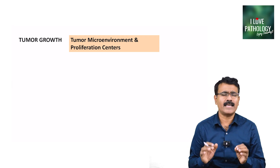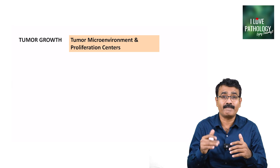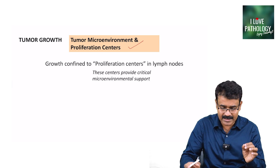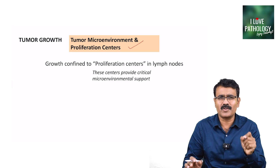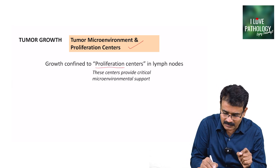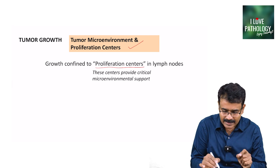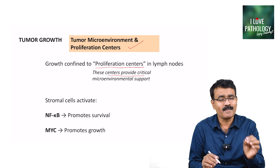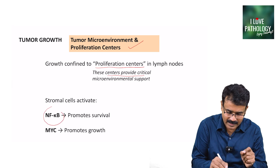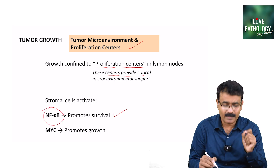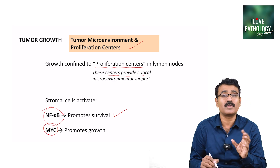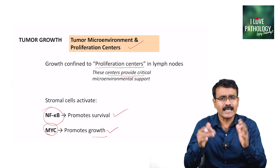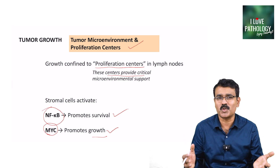Once we have the mutations, how does the tumor grow? The growth of CLL is confined predominantly in proliferation centers in the lymph node, which provide critical microenvironmental support. The stromal cells there secrete nuclear factor kappa-B, which promotes survival, and they also activate MYC protein, which promotes growth. These are the two important components released by stromal cells that help in proliferation of these tumor cells.